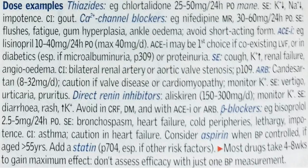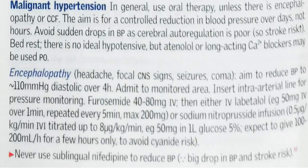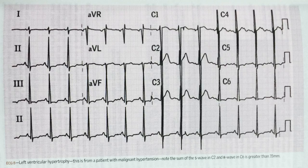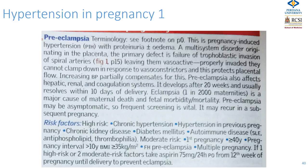Now let's look at hypertension and pregnancy — this is a particular issue. Pregnancy hypertension may be associated with proteinuria and oedema; if that's the case, you're talking about pre-eclampsia. This is a major syndrome and quite important to predict — although death in pregnancy is rare, some women still die from pre-eclampsia that hasn't been considered or picked up. It is a multi-system disorder which begins in the placenta with a primary defect: failure of trophoblastic invasion of spiral arteries.